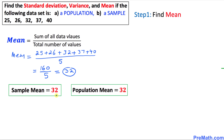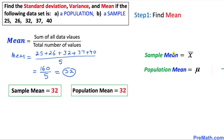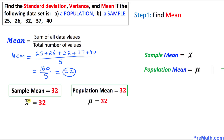The mean for both sample and population are always the same. Keep in mind that the sample mean is represented by x-bar, whereas the population mean is represented by mu. So in our case, x-bar equals 32 and mu equals 32.